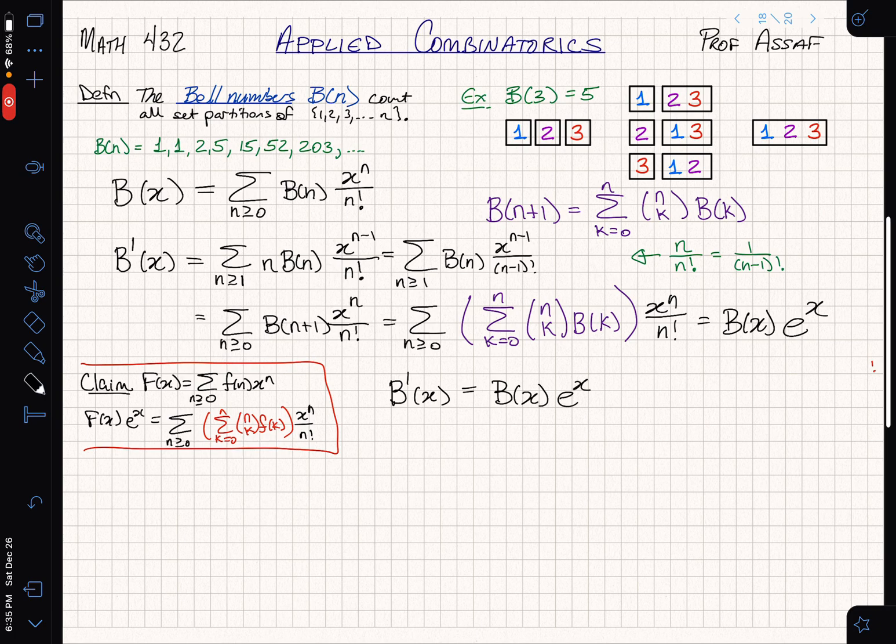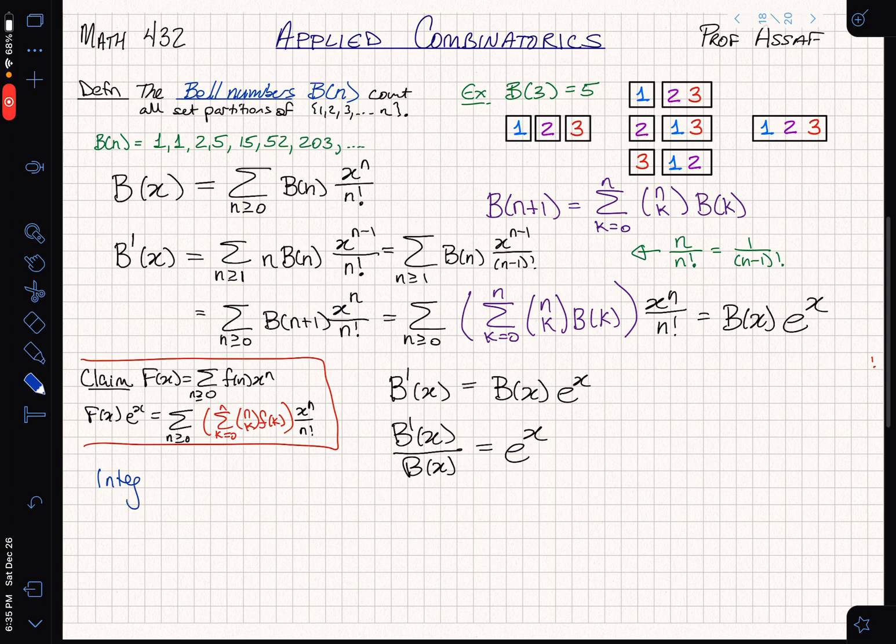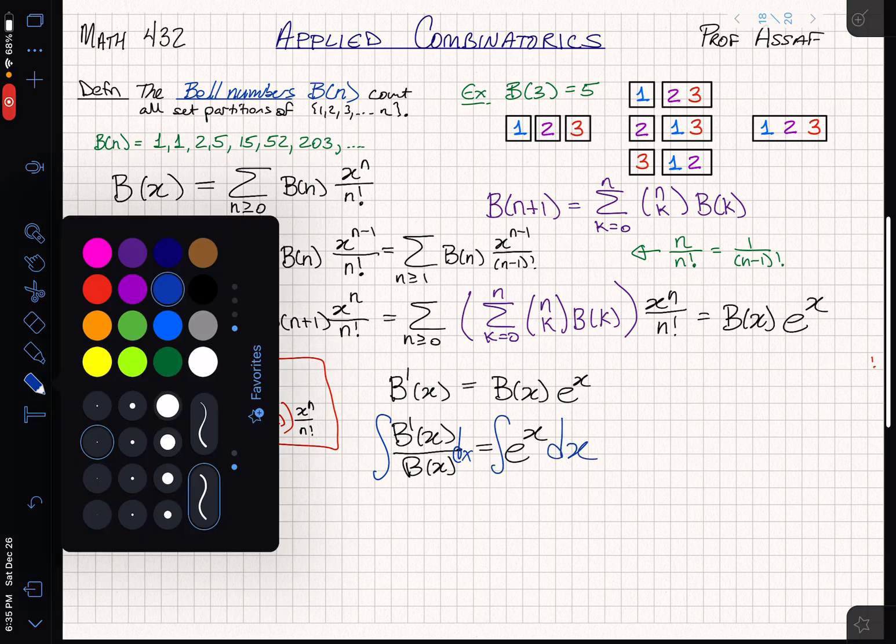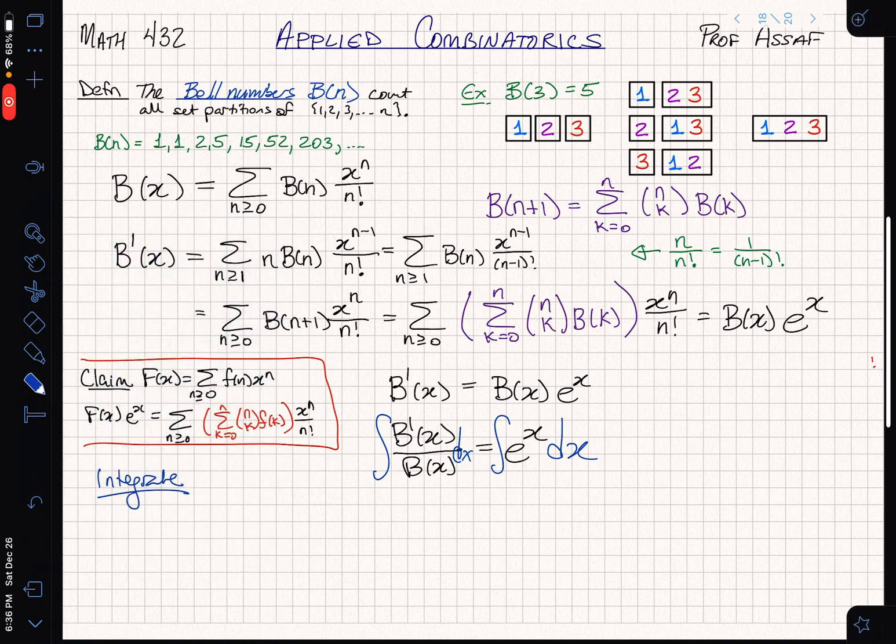We have B'(x) is equal to B(x) e to the x. How do we solve such a thing? First of all, let's isolate our B. So we have B'(x) divided by B(x) is equal to e to the x. So now what are we going to do? Our next and final trick is that we're going to integrate.